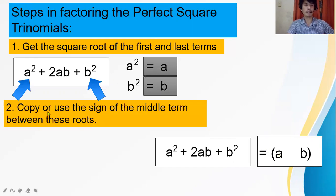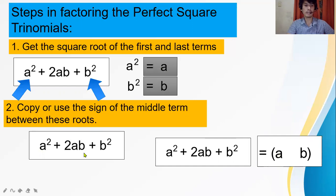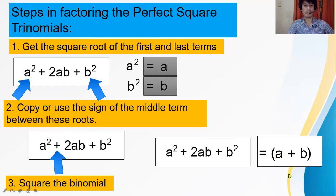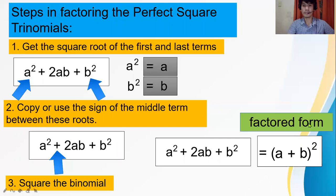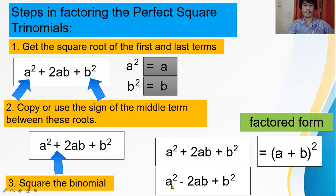Step 2: copy or use the sign of the middle term between these roots. For a squared plus 2ab plus b squared, the sign of the middle term is positive — so copy positive. Step 3: square the binomial. Therefore, a squared plus 2ab plus b squared factors to (a plus b) squared. And a squared minus 2ab plus b squared factors to (a minus b) squared.